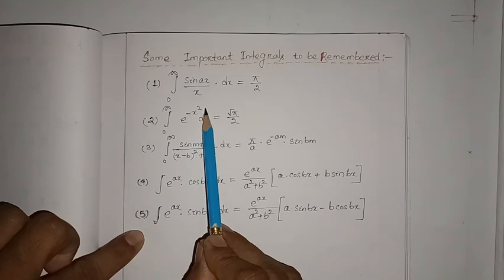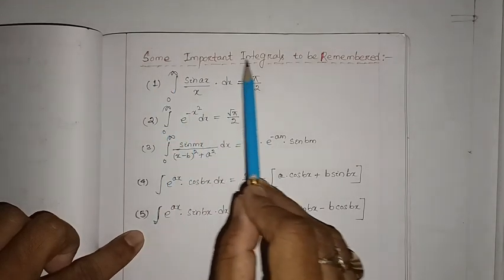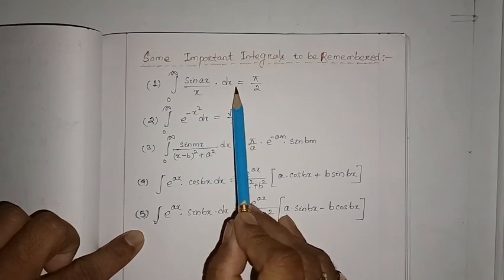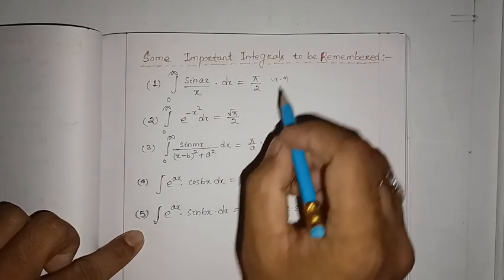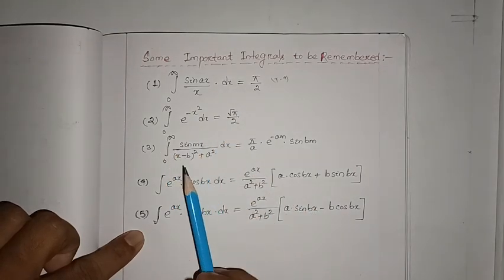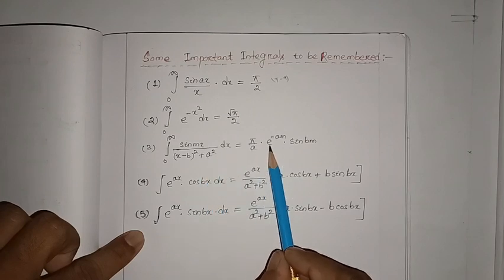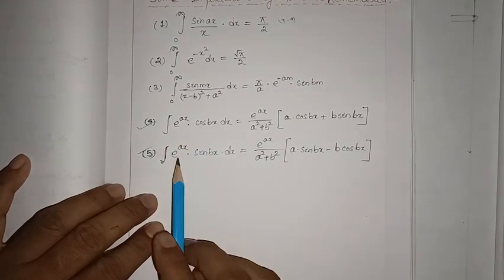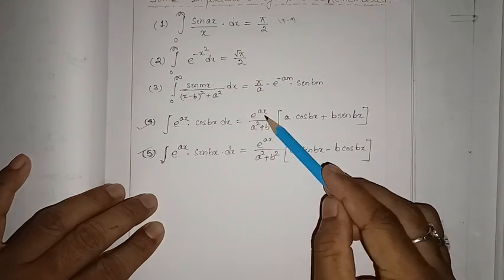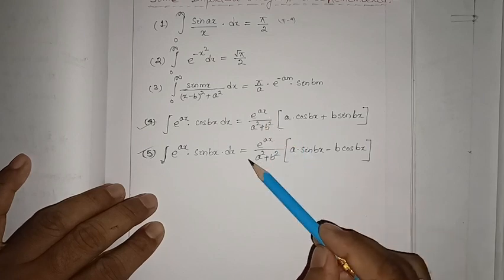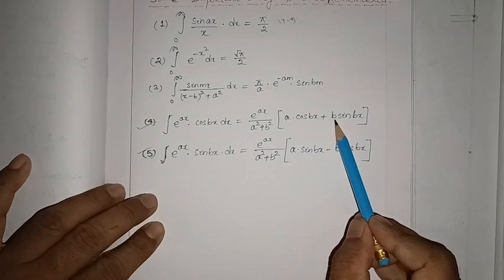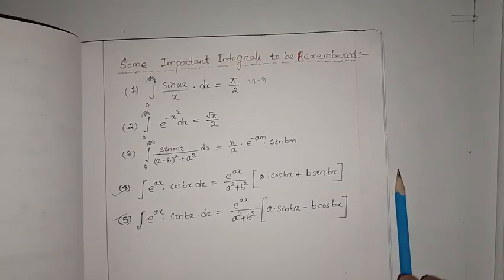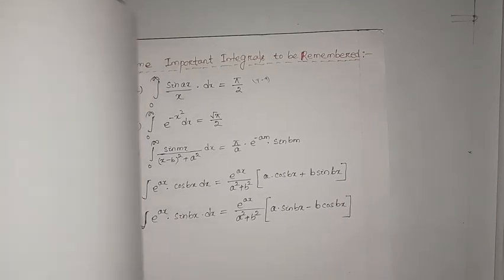Here are the important integrals to remember for solving numericals: integral zero to infinity of sin(ax)/x dx = π/2; integral of e to the minus x squared dx = root(π)/2 (solved by type four method / Cauchy's residue theorem); integral zero to infinity of sin(mx)/(x² + a²) dx = π/a · e to the minus am · sin(bm); and the standard integrals for e^(ax)cos(bx) and e^(ax)sin(bx), where the denominator is a² + b² for both, with numerators a·cos(bx) + b·sin(bx) and a·sin(bx) - b·cos(bx) respectively. Remember these five important integrals for your numericals.